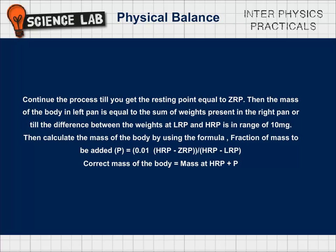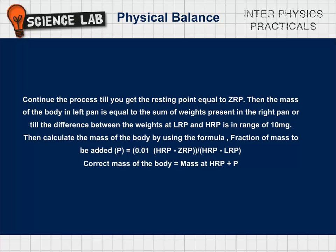Then, calculate the mass of the body by using the formula. Fraction of mass to be added P is equal to 0.01 into HRP minus ZRP by HRP minus LRP. Correct mass of the body is equal to mass at HRP plus P.